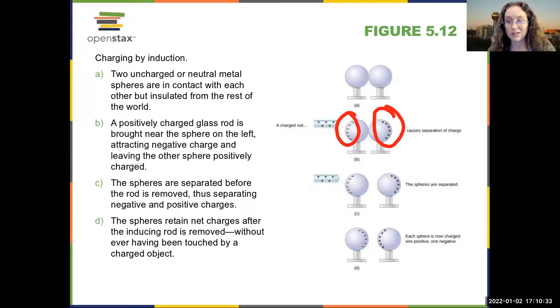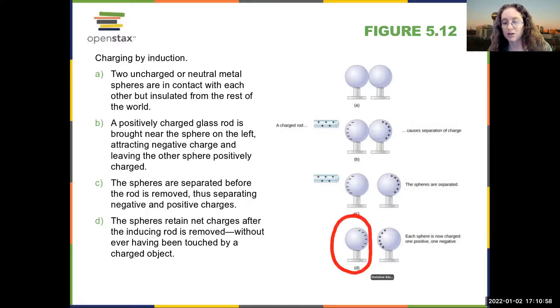So what's going to happen is that the electrons are going to get pulled towards the positive charge and the positive charge is going to get pushed away. What's really happening is, of course, what's moving in the conductor is the electrons. So you're pulling the electrons over to this side. And then if you separate the two spheres while the charge is still nearby, you can no longer get electrons traveling between the two of them.